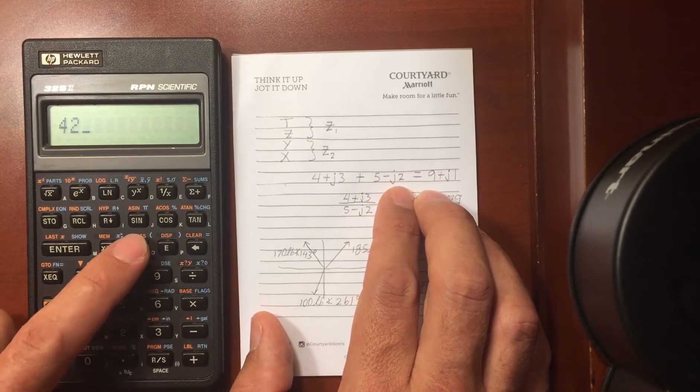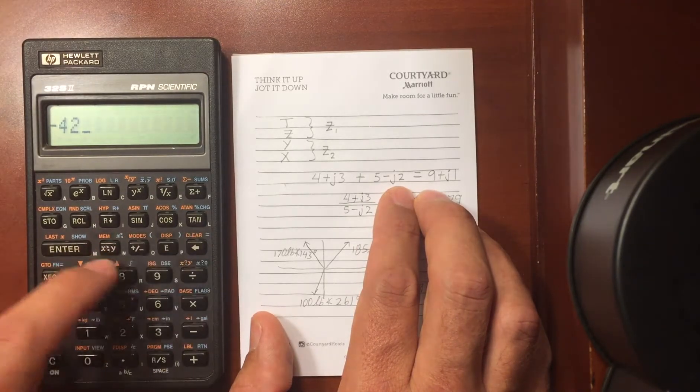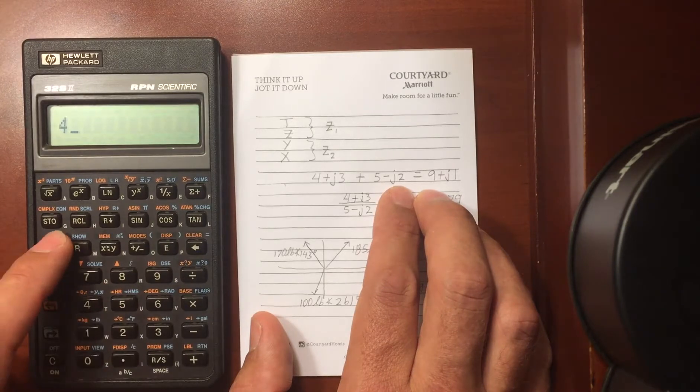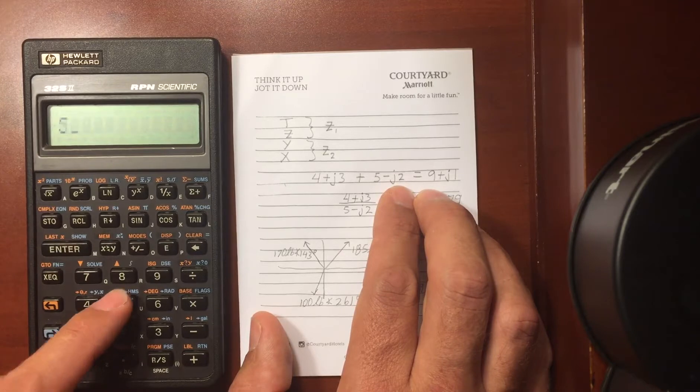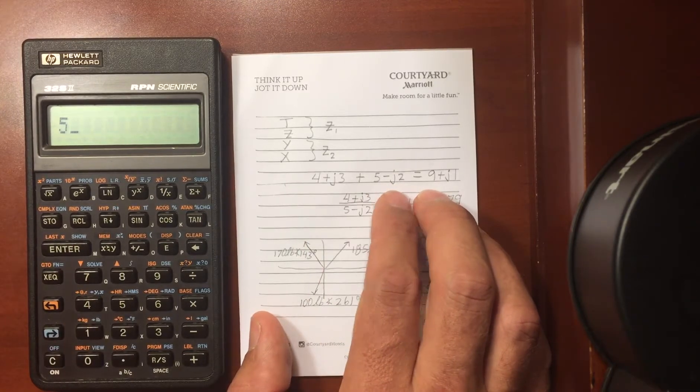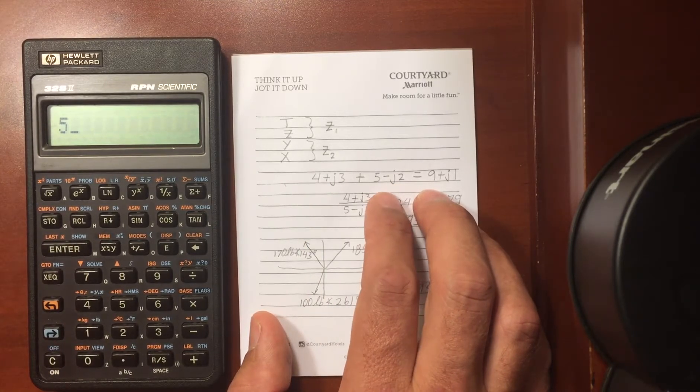So again, the imaginary part first, so a negative, hit enter, 2, negative portion, hit enter, and 5. So I've got all four of these numbers entered into the proper order now.